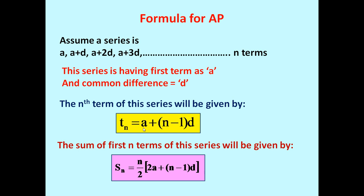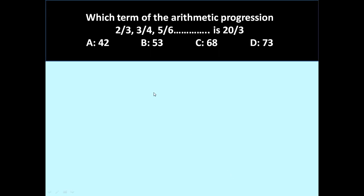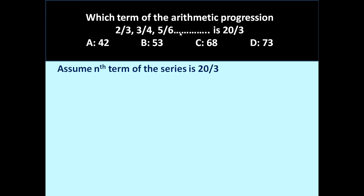We will learn in this session how to use these two formulas for solving various problems. The first problem is: which term of the arithmetic progression 2/3, 3/4, 5/6 is equal to 20/3? Which term of this series will be 20/3 — is it the 42nd, 53rd, 68th, or 73rd term?